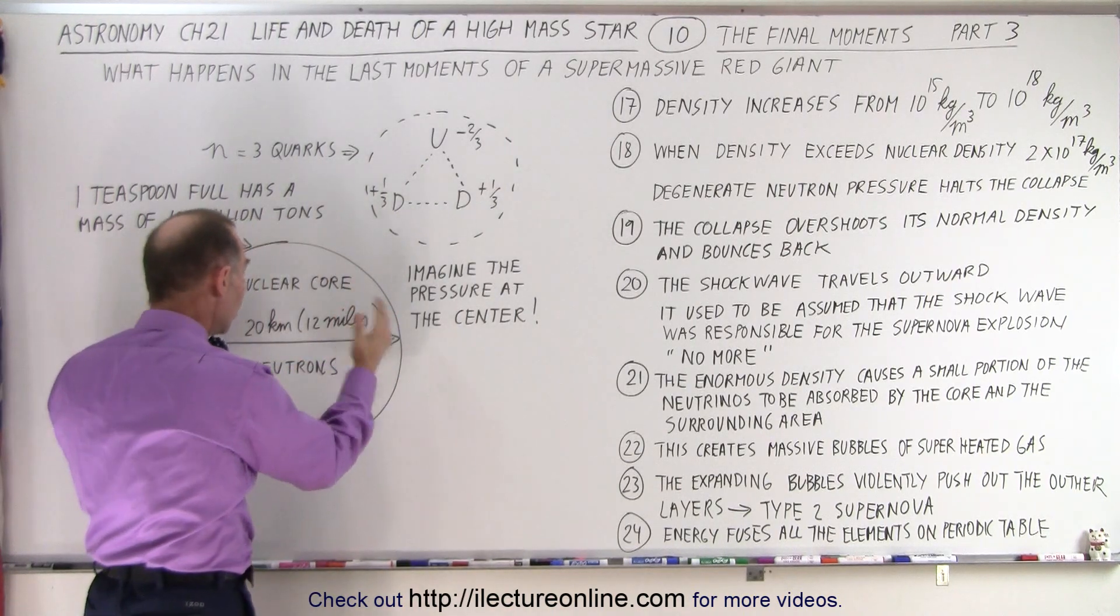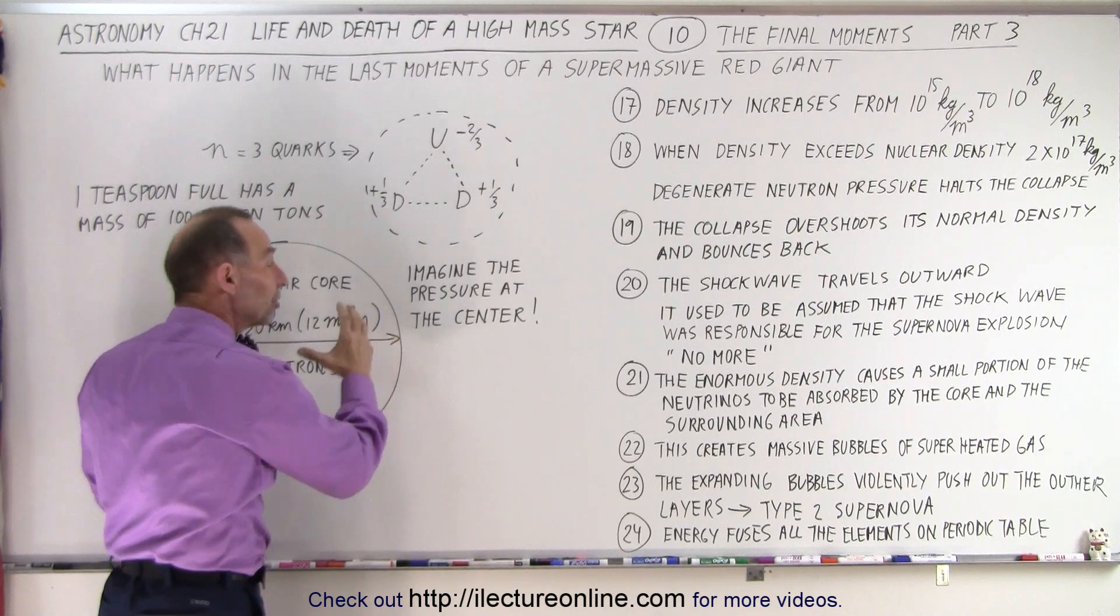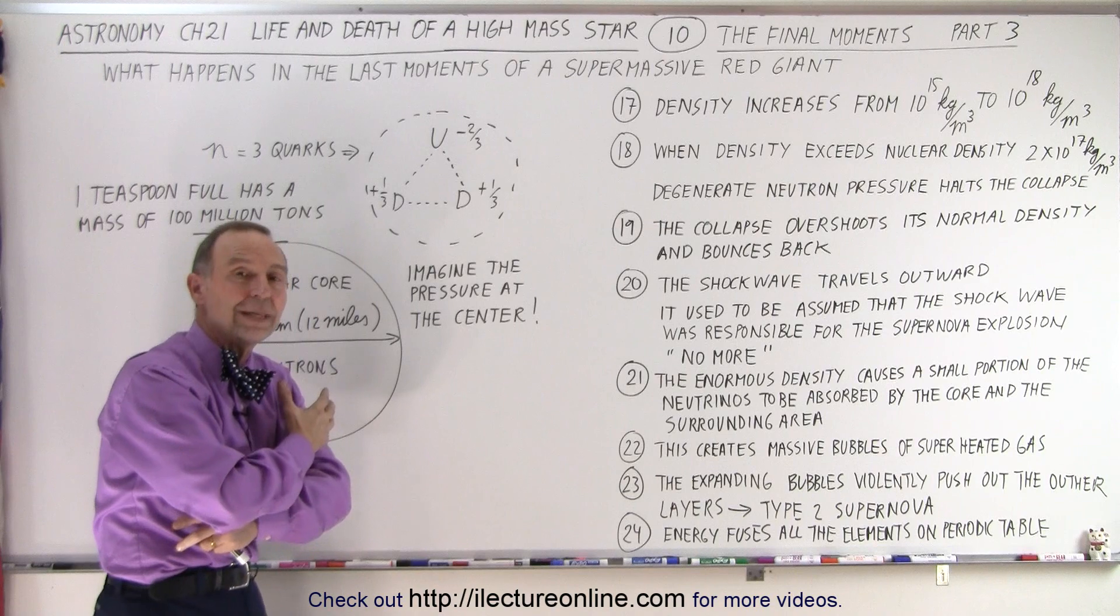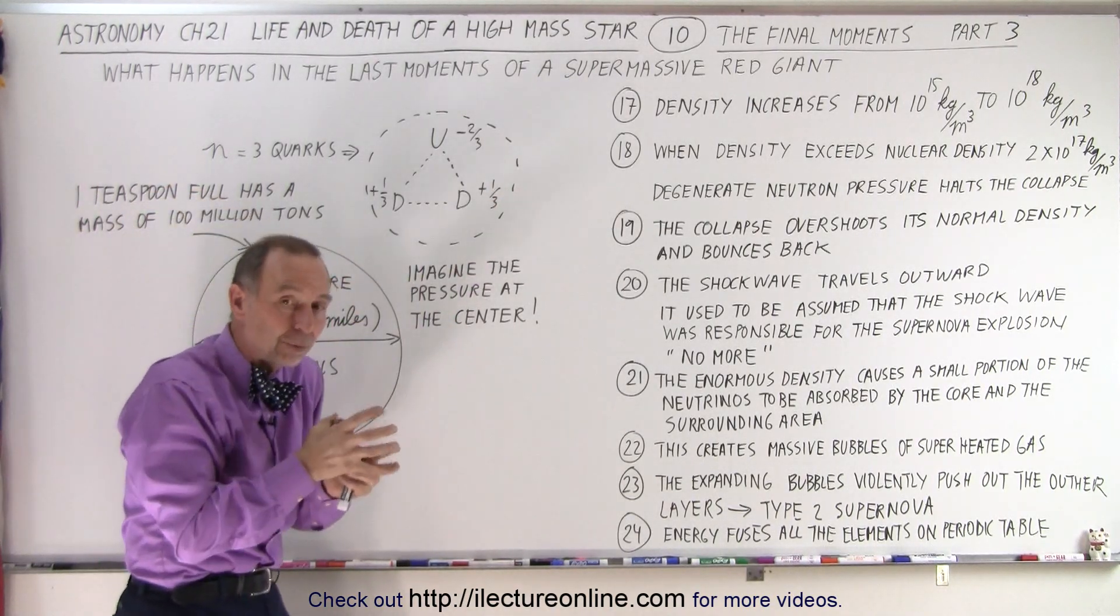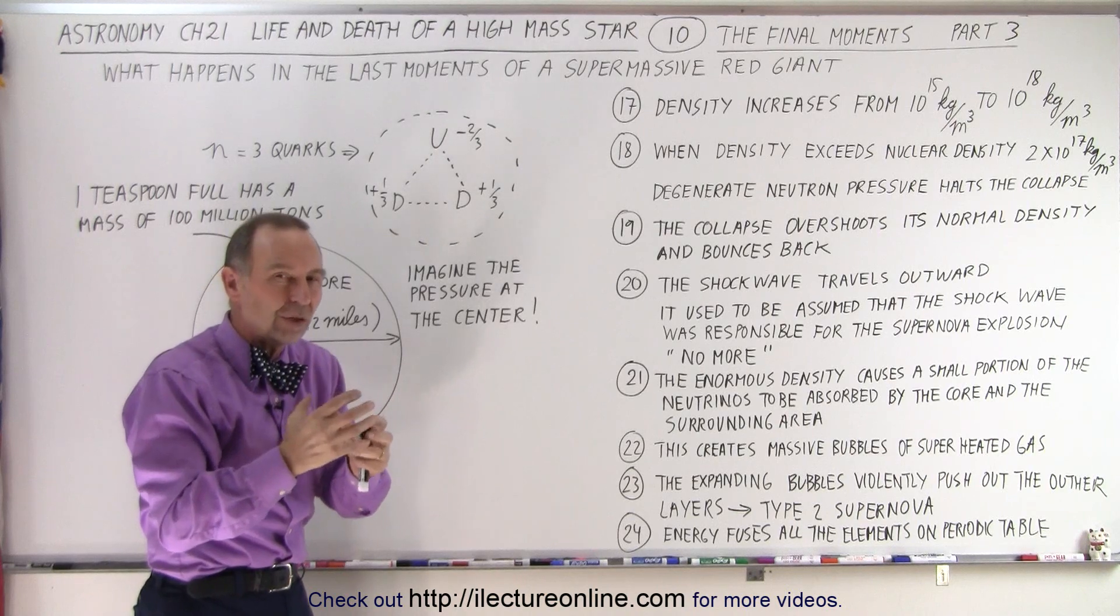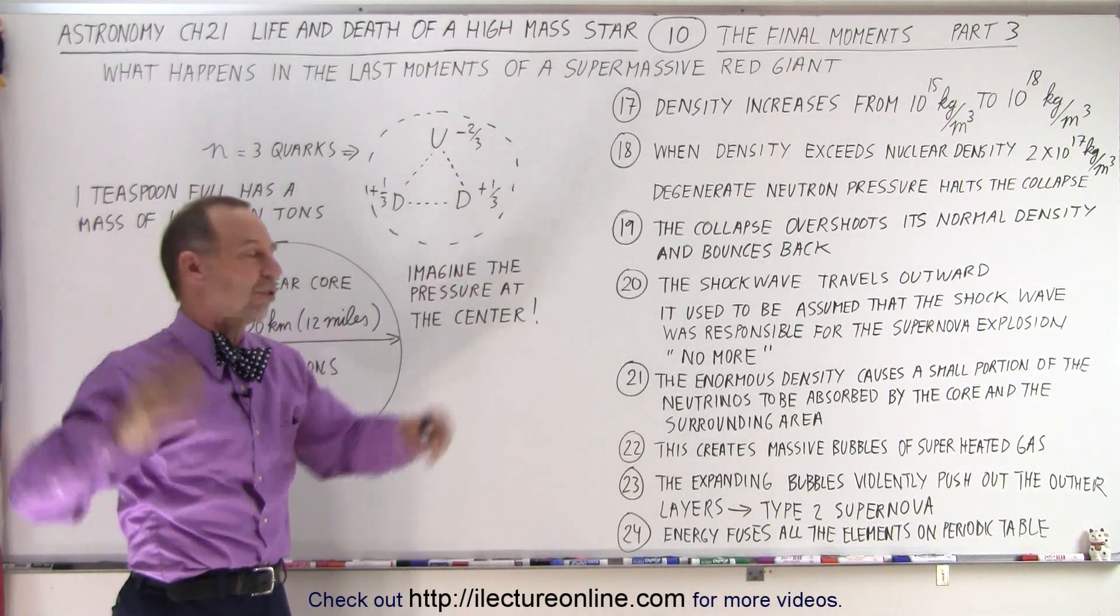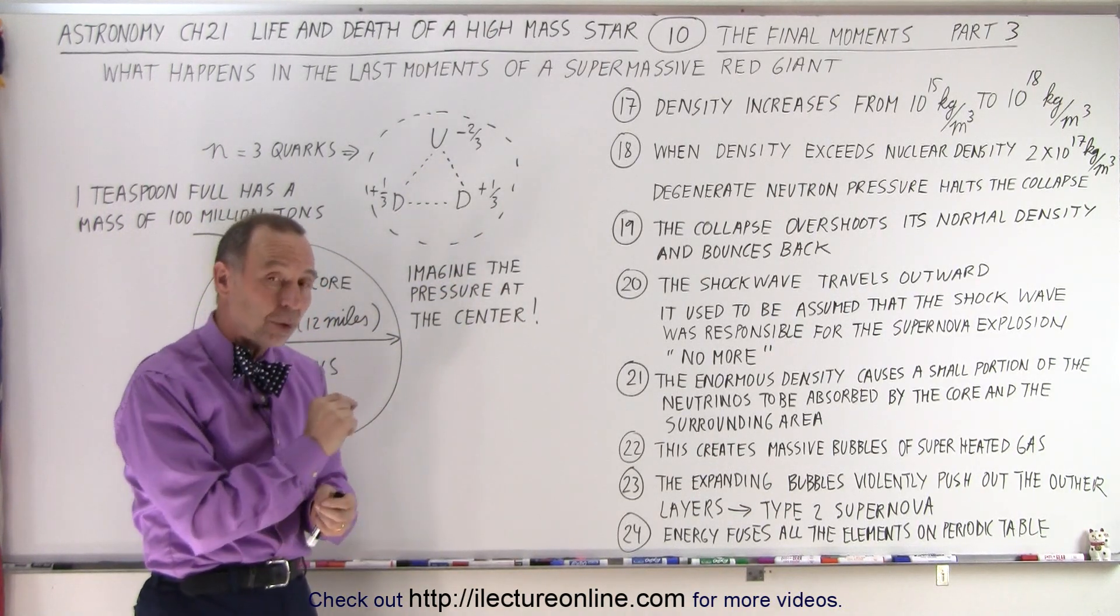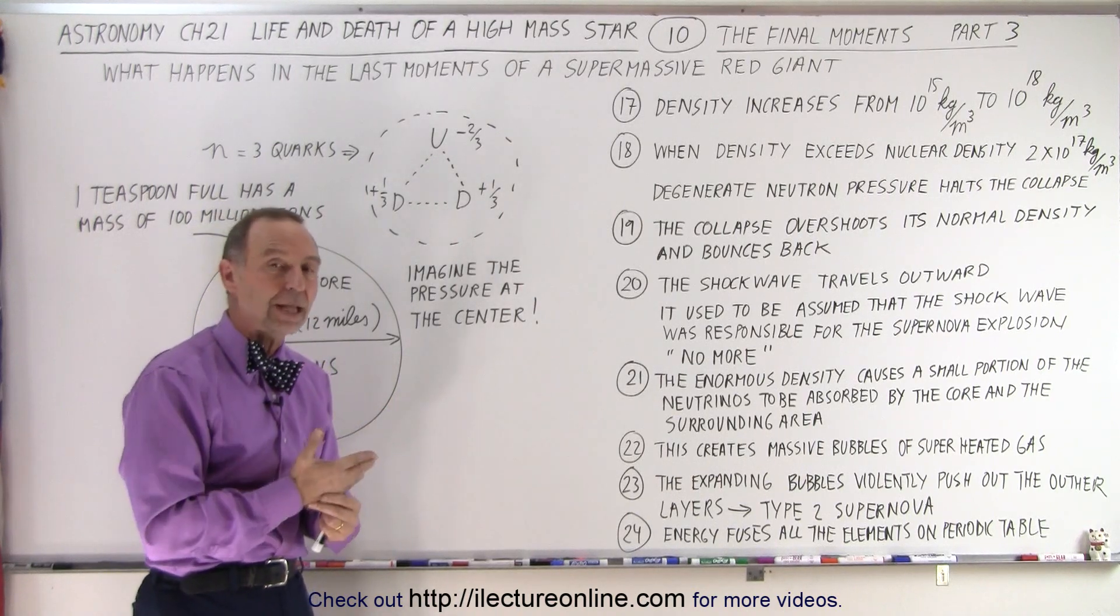Where then all you would have left is that ball at the very center, that collapsed core, that's 20 kilometers across, made out of dense nuclear material, primarily neutrons. And the rest of the material of the star would get exploded outwards from those expanding bubbles. Those bubbles that absorbed that small percentage of neutrinos that caused them to heat up to enormous temperatures, pushing out all the material in a violent explosion. So, in that explosion is where all the material was built that's now on the periodic table.